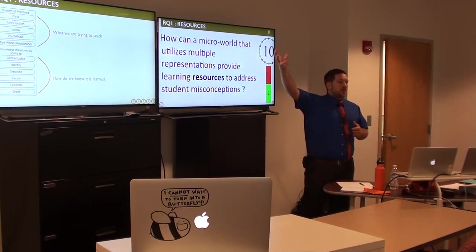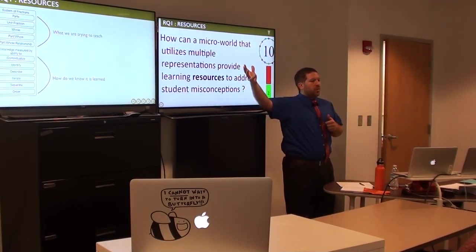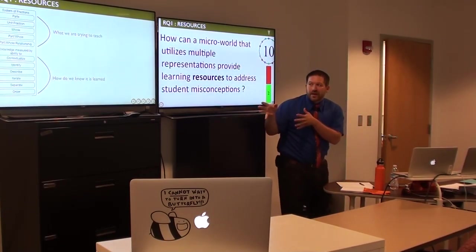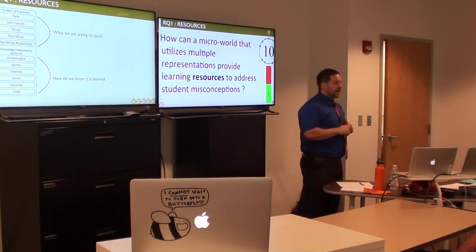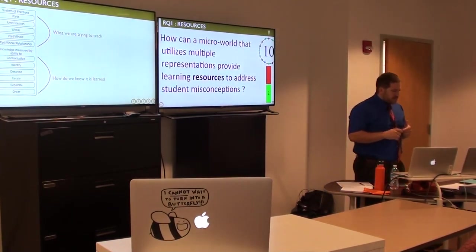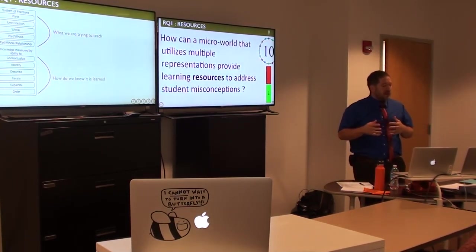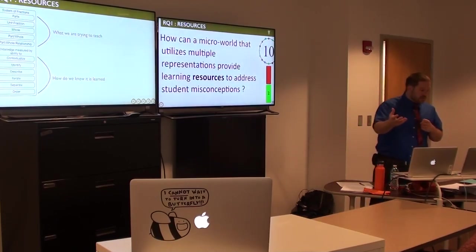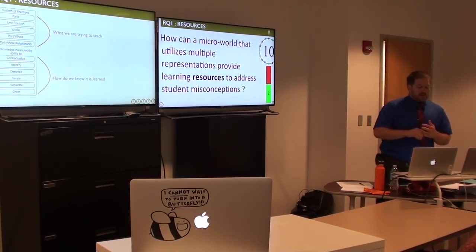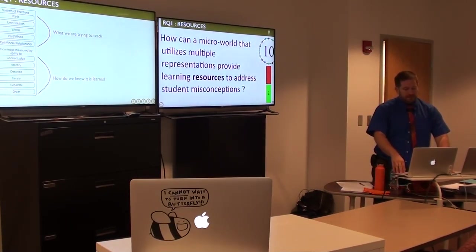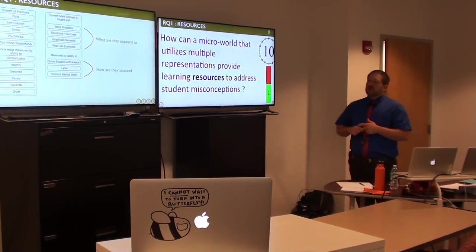So how can a microworld utilize multiple representations? We have the core four, the audio. We have the sound that it's making. We have the animations, the transitions, the labels. Many different representations provide learning resources to address student misconceptions. So we want them to learn fractions. And we can know if they're learning fractions by looking at their descriptions. Are they able to contextualize it? Can they identify the correct things? Are they iterating? Are they separating? Or are they describing the order properly?